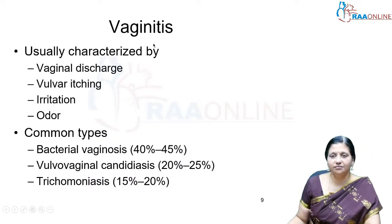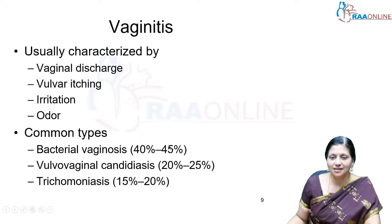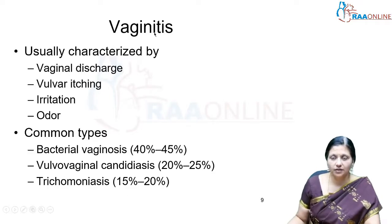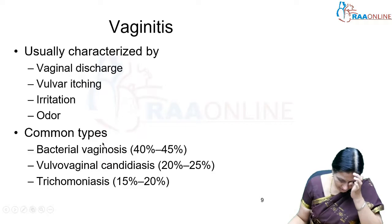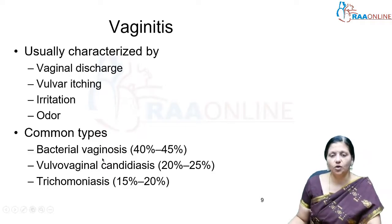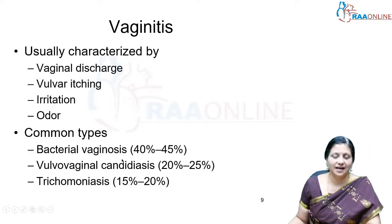Vaginitis, or infection of the vagina, is characterized by discharge, itching, irritation, and odor. The commonest varieties are bacterial vaginosis, vulvovaginal candidiasis, and trichomoniasis. There is a distinction between the terms '-itis' and '-osis': some organisms are normally found inside the vagina, so it is not actually an infection but a cohabitation — which is why some prefer the term 'vaginosis.' The presence of bacteria other than lactobacilli is called vaginosis.